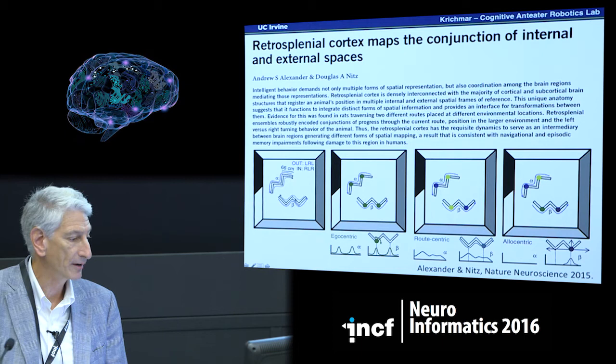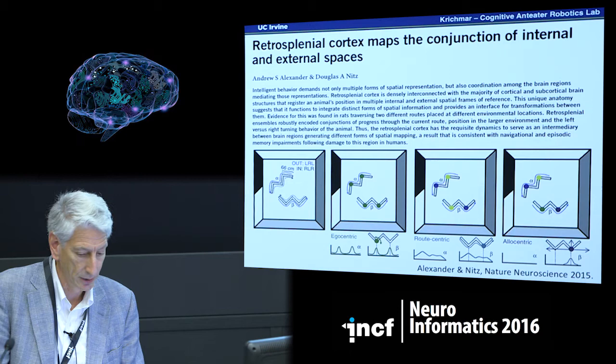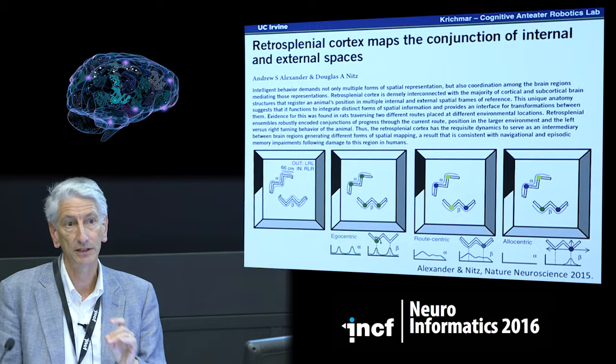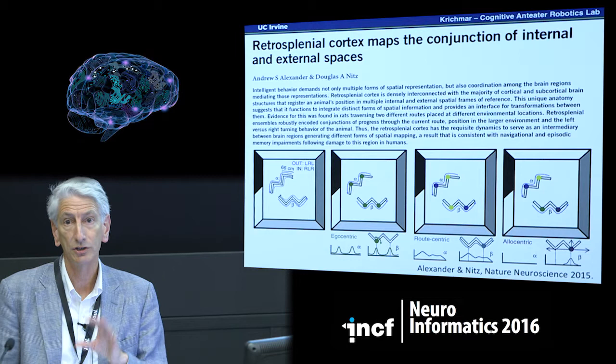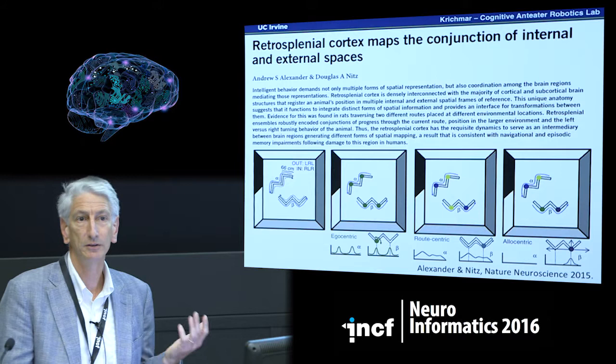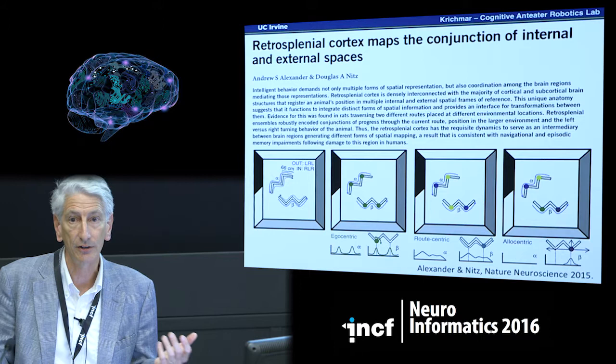If it's egocentric, neurons fire every time the rat takes a right turn. If it's allocentric, neurons fire in specific places in the environment — like a place cell, but not sharp place cells. Something different is called route-centric: you find neurons that fire on, say, the second left turn of a path. In this interesting area connected to hippocampus, parietal cortex, and subiculum, they find these three classes of cells important for spatial navigation.